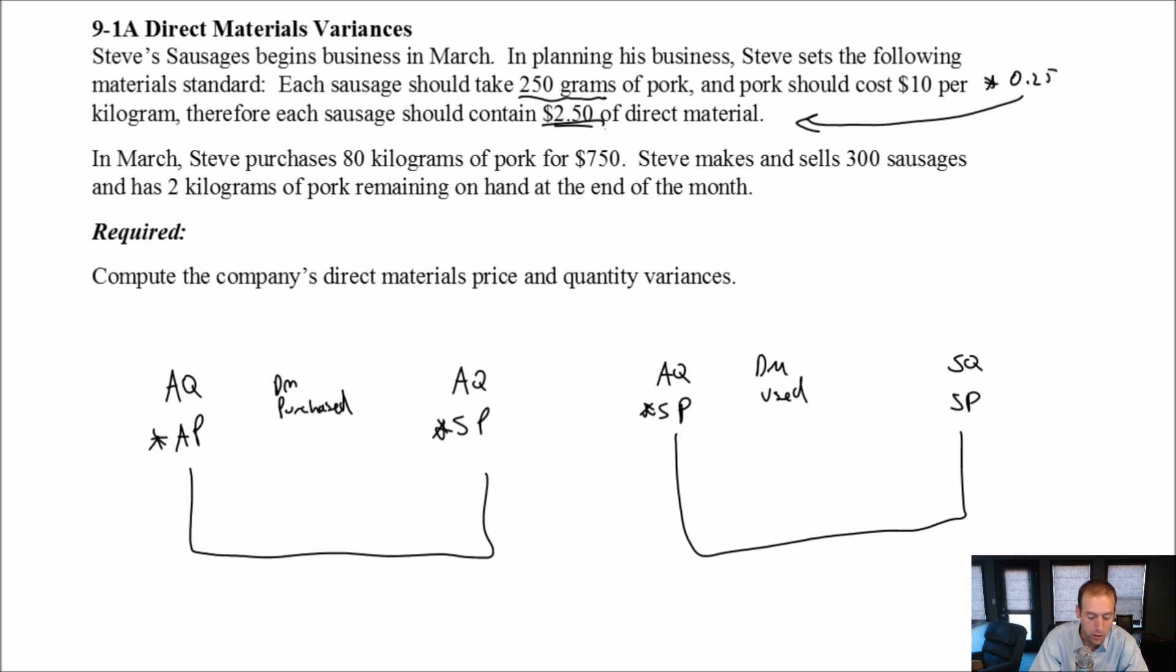In March, Steve purchases 80 kilograms of pork for $750. Steve makes and sells 300 sausages and has 2 kilograms of pork remaining on hand at the end of the month. Okay, so we want to know whether Steve was efficient, whether he was meeting his standards, or whether he wasn't. And of course, this is a really great tool for evaluating, as I mentioned in the intro video. So let's start to try to figure out the AQ, the actual quantity that Steve purchased. Steve purchased how many kilograms of pork? Well, he purchased 80 kilograms of pork.